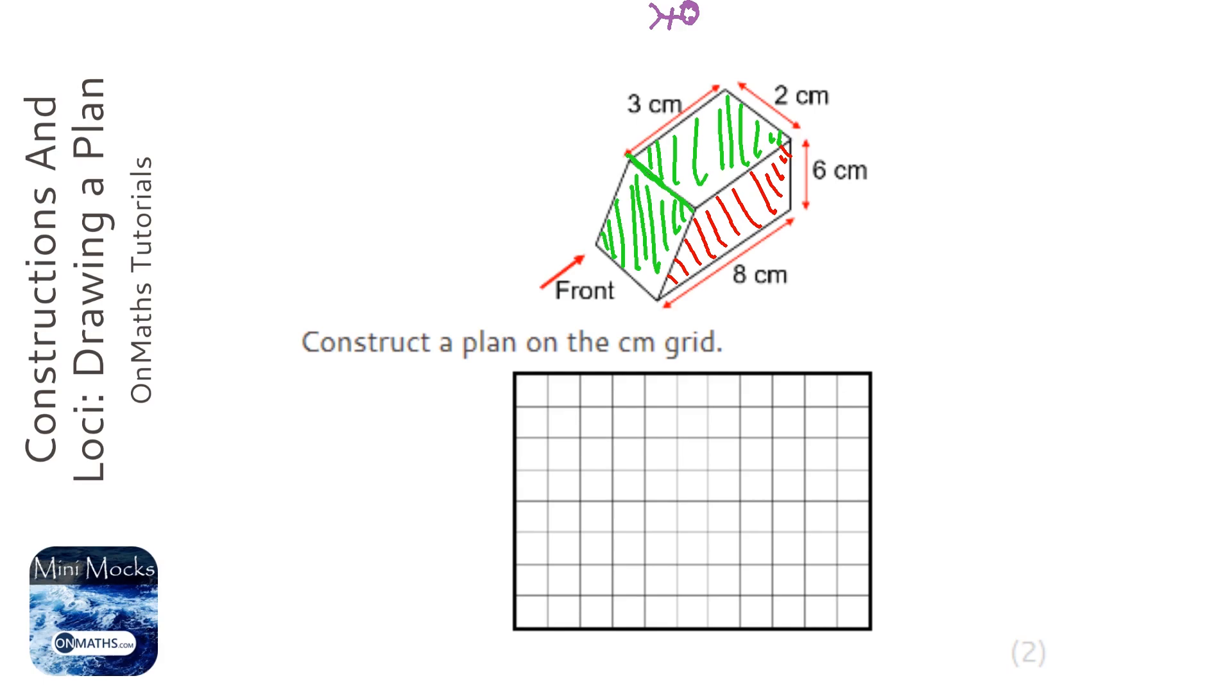The lengths we can see - there's two across here. Now the total is eight across, the bit at the top is three, so therefore this length here is going to be five centimeters.